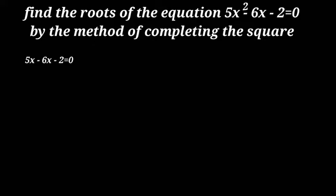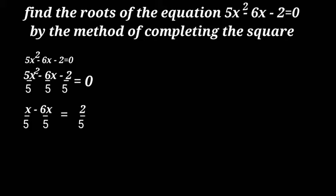5x² - 6x - 2 = 0. Dividing both sides by 5, that is equal to x² - 6x/5 - 2/5 = 0.